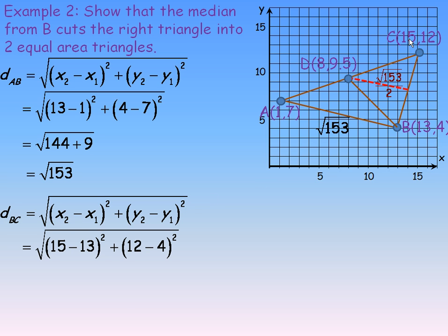So, we would go 15 minus 13, underneath the root and squared here, and then 12 minus 4 as well. So, 15 minus 13 is 2, and 2 squared is 4. 12 minus 4 is 8, and 8 squared is 64. And so, we get the square root of 68, and we'll place that on the diagram up here.